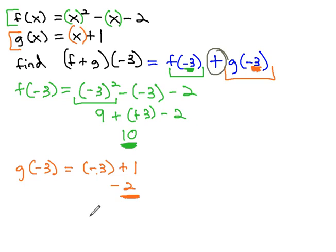f(-3) was 10, and we add g(-3), which was -2. So 10 + (-2) = 8.